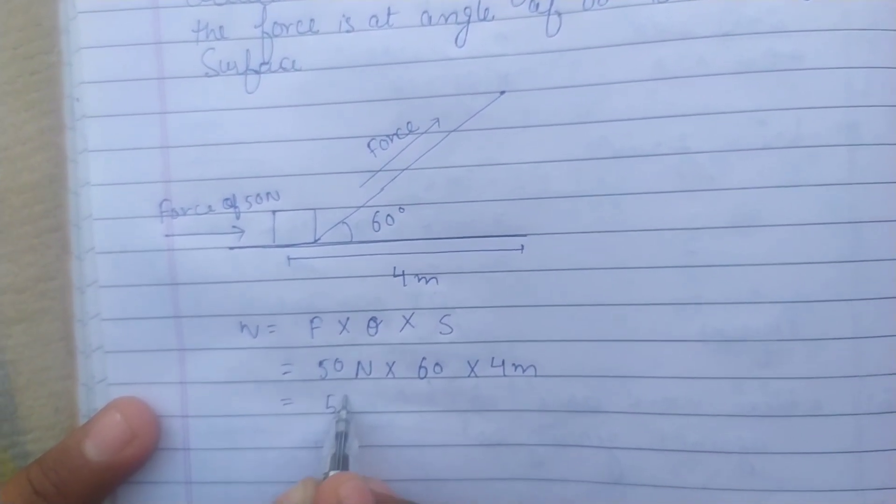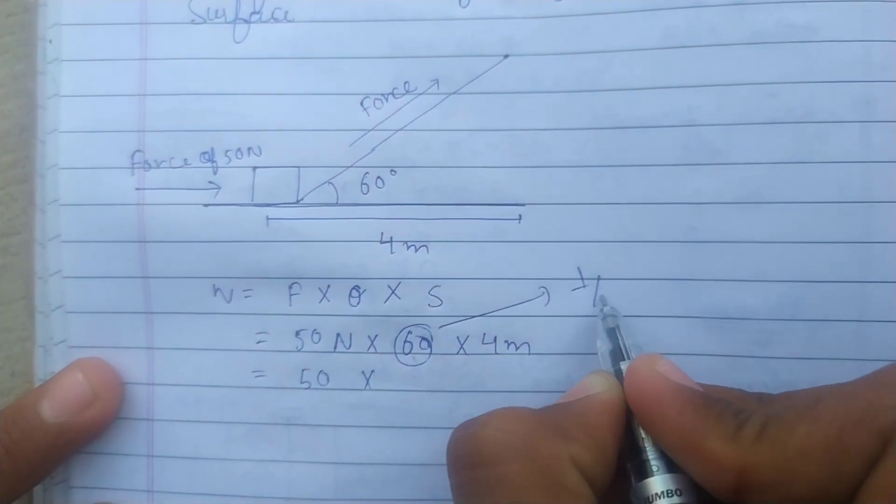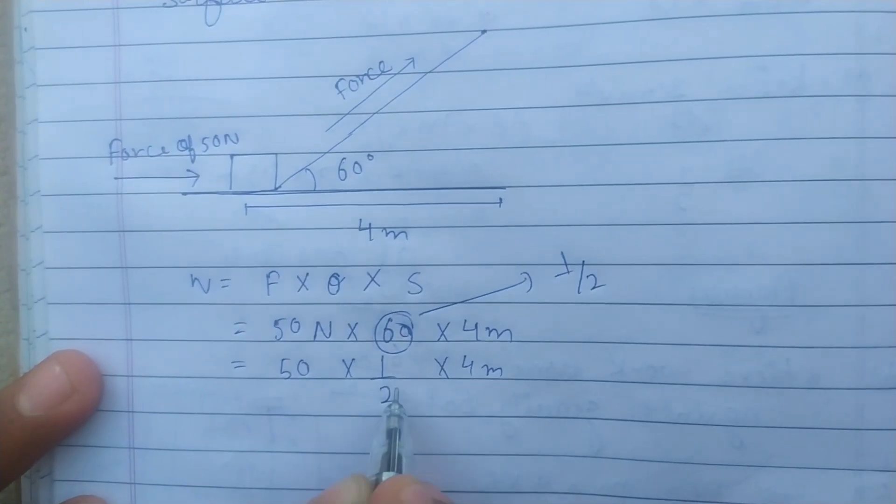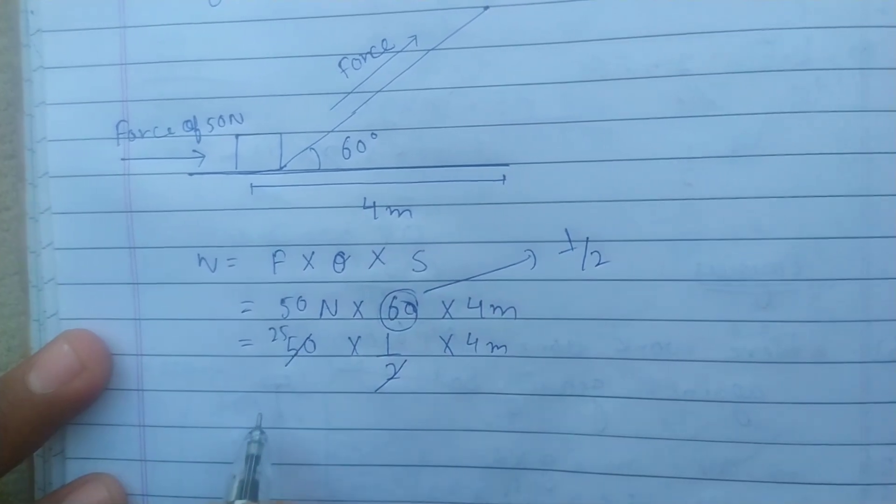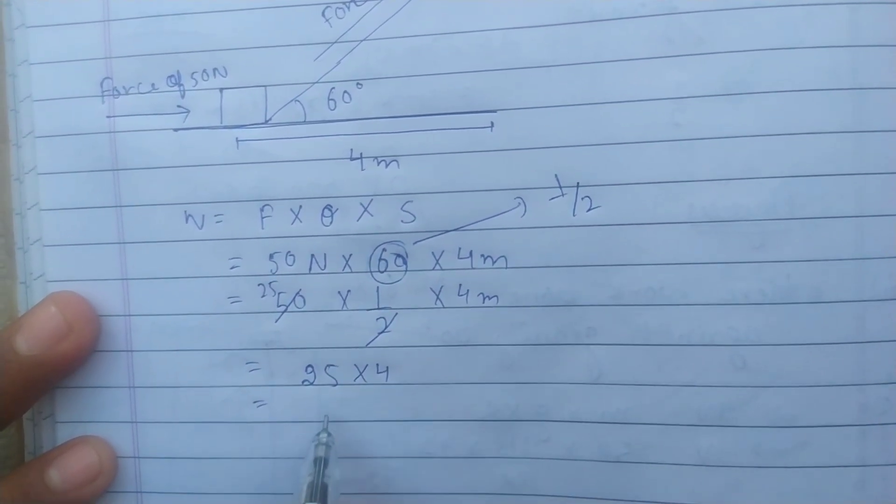50 Newton - the value of cos 60 is one-half. By simplification, we get 25 into 4. The answer is 100 joules.